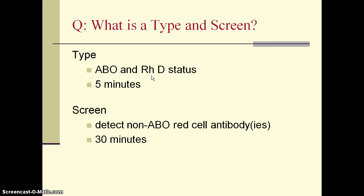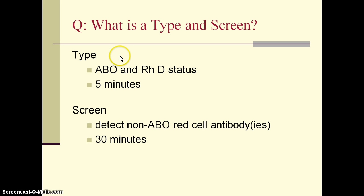Blood type refers to the status of your red cell antigen expression. To ensure your patient gets ABO compatible blood, we need to find out what their red cells express in terms of A and B antigen status. There are four major blood groups: Group O individuals have neither A nor B antigens; Group A individuals have only A antigen; Group B individuals have only B antigen; and Group AB individuals co-express both A and B antigens on the red cell surface.